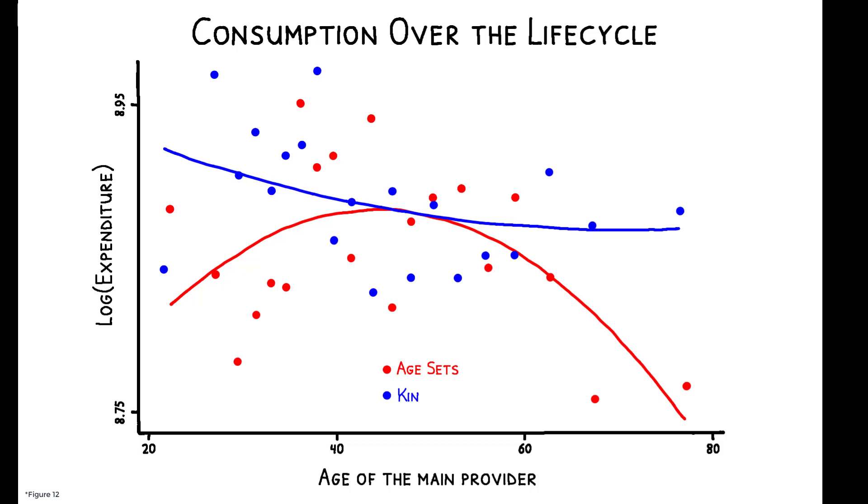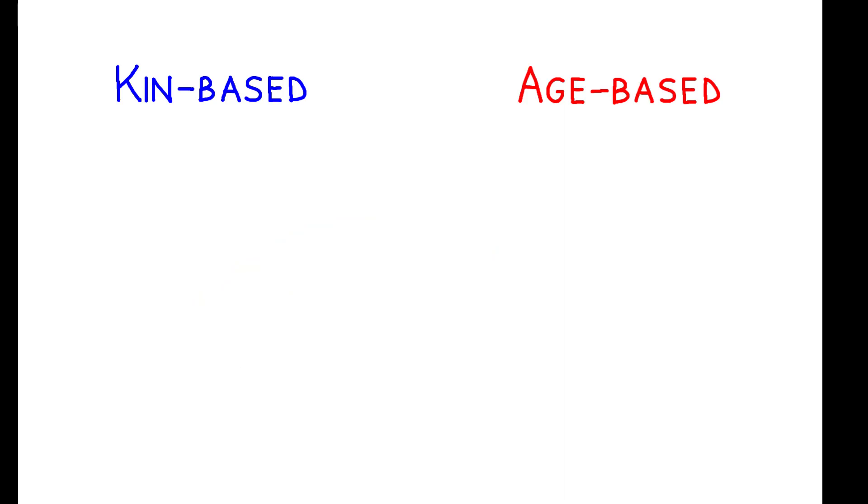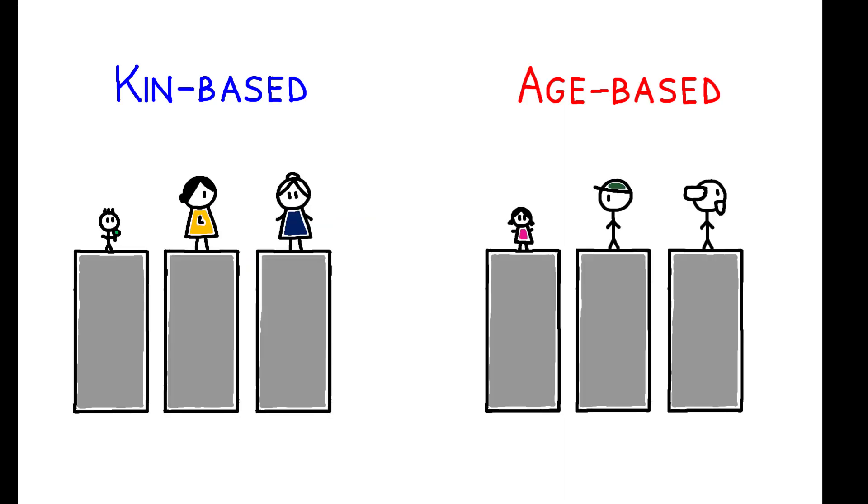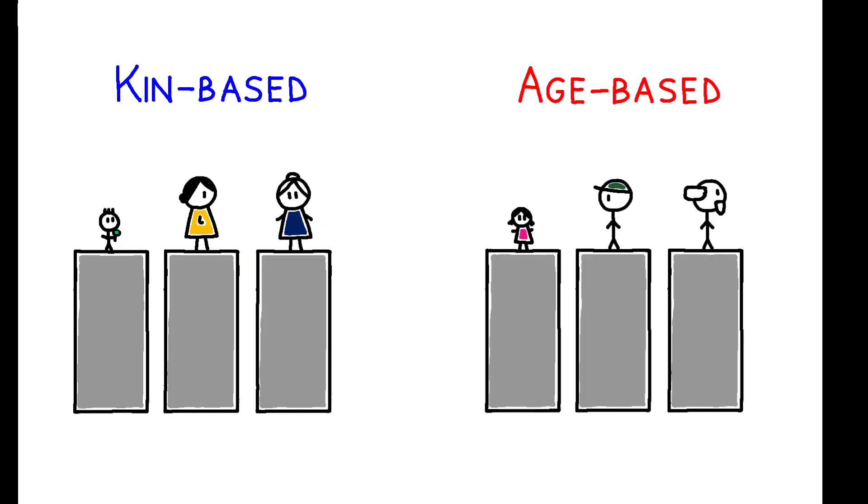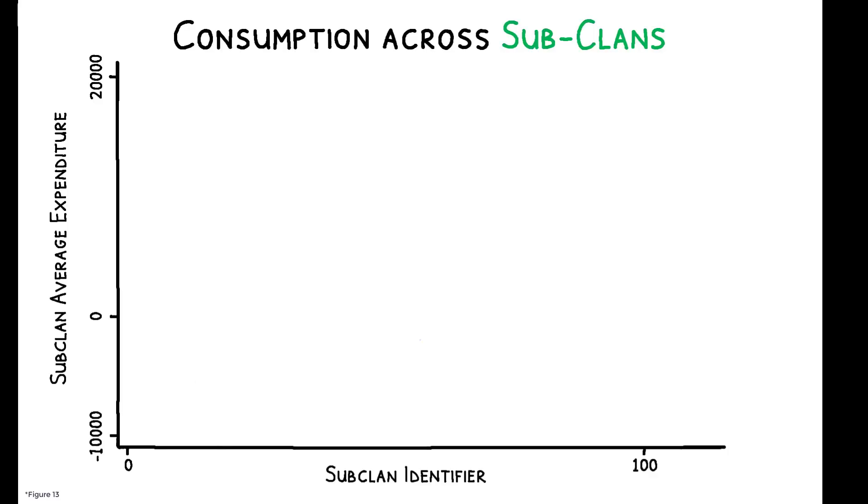But in kin-based societies, where individuals have strong economic ties to people at all stages of life, consumption over the life cycle is relatively smooth. This shows how different social structures drive different patterns of inequality. Age-set societies generate greater inequality across cohorts and leave the young and the old particularly at risk. But when it comes to inequality across sub-clans, the patterns look very different.